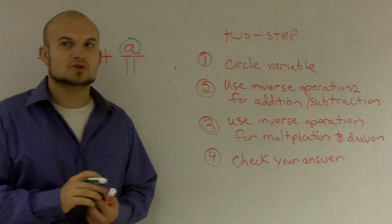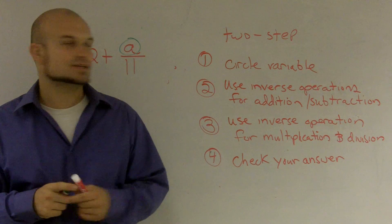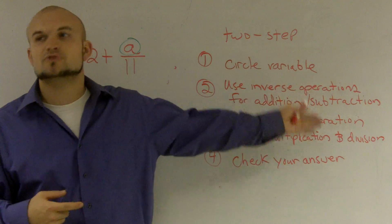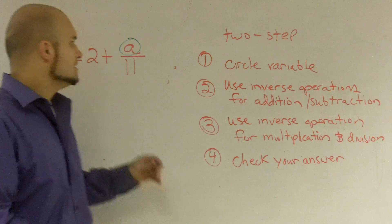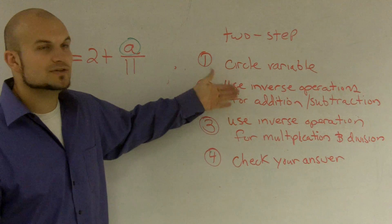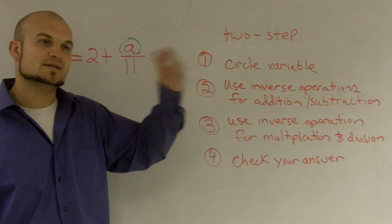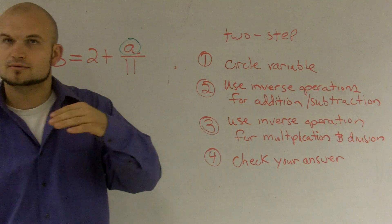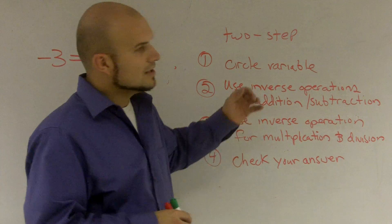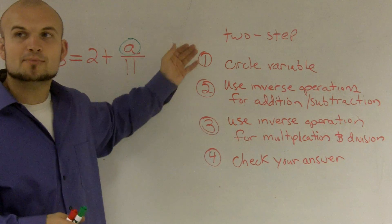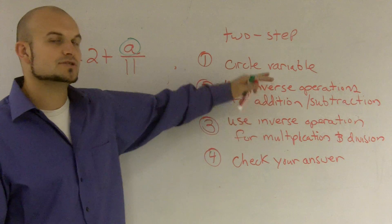Next, it says use the inverse operations for addition and subtraction. What we learned in one-step equations is using inverse operations — if I have an equation that's added to a variable, I'm going to subtract; and if I have a number that's subtracted from my variable, I'm going to add. The reason why we use addition and subtraction first is we're actually doing the reverse order of operations. When you simplify, you do parentheses, exponents, addition, subtraction, multiplication, and division. When solving a problem, you do the reverse.